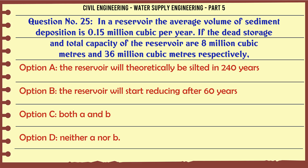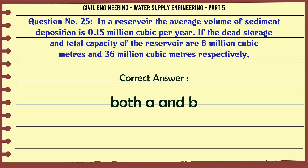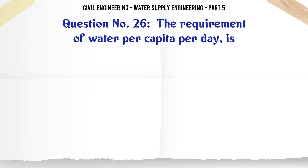In a reservoir, the average volume of sediment deposition is 0.15 million cubic meters per year. If the dead storage and total capacity are 8 million and 36 million cubic meters respectively: A. The reservoir will theoretically be silted in 240 years; B. The reservoir will start reducing after 60 years; C. Both A and B; D. Neither A nor B. The correct answer is Both A and B.